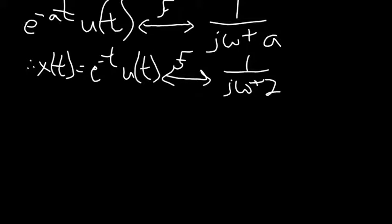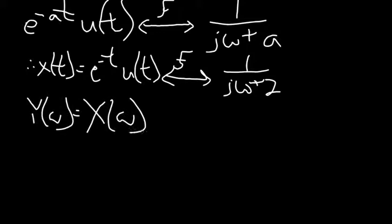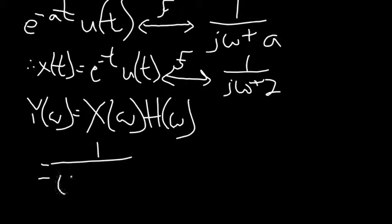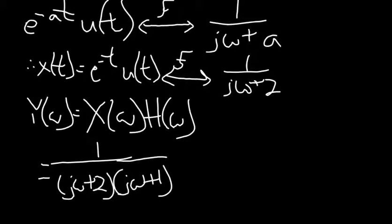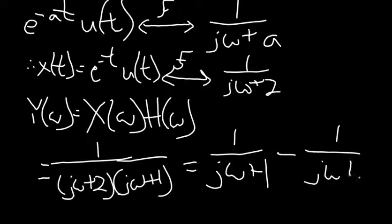Therefore, solving for Y(omega), which equals X(omega) times H(omega), we get 1 divided by the quantity (j omega plus 2)(j omega plus 1), which, using partial fractions, becomes 1 over j omega plus 1 minus 1 over j omega plus 2. At the end of this video, I will have a detailed explanation of the partial fractions.